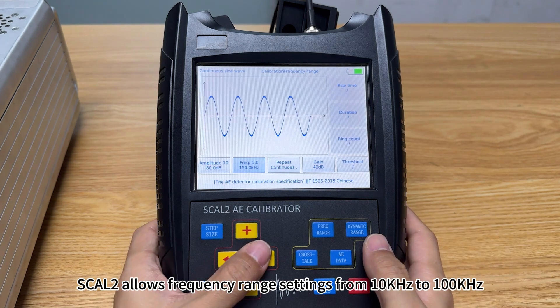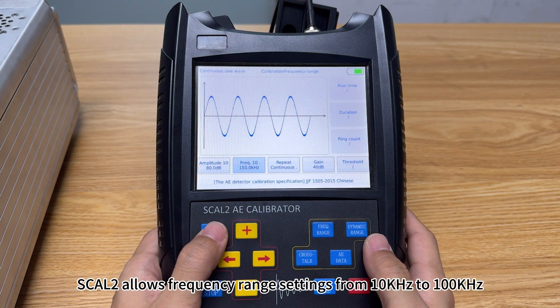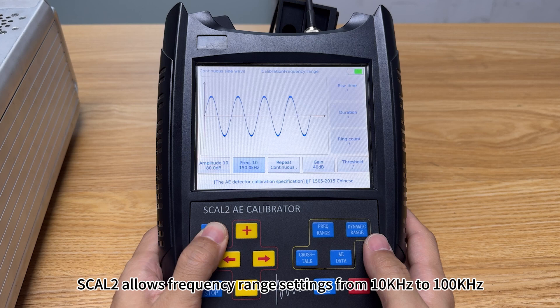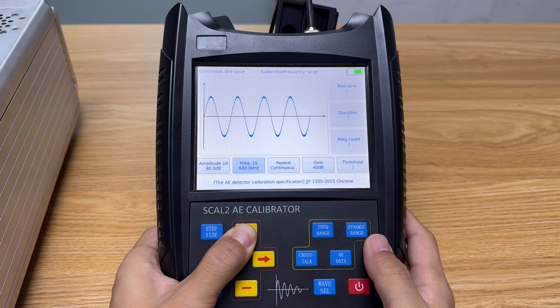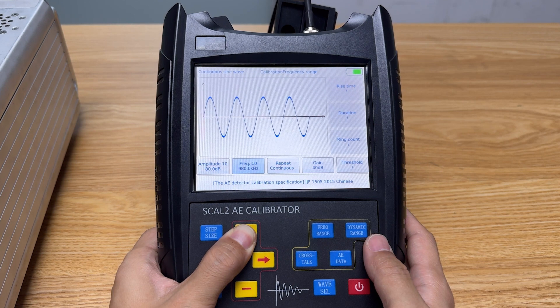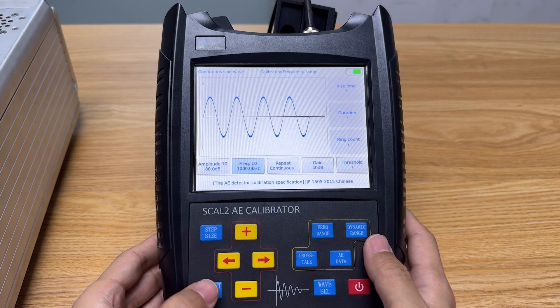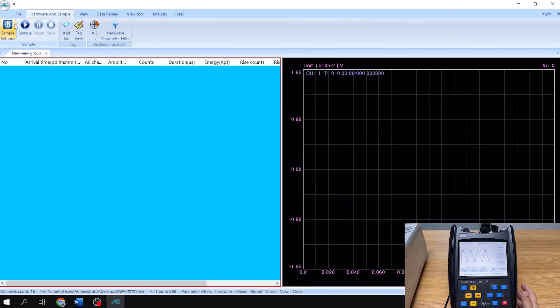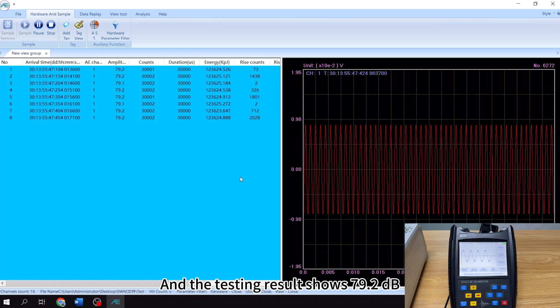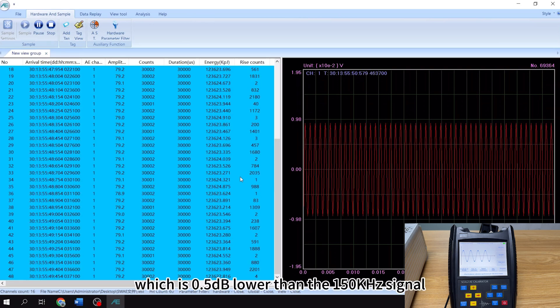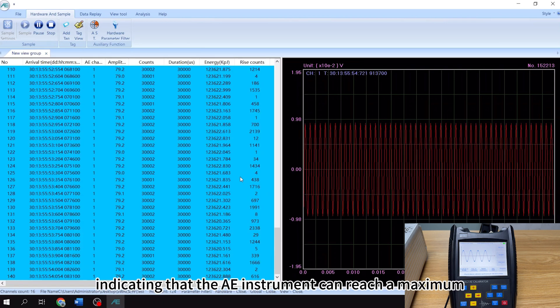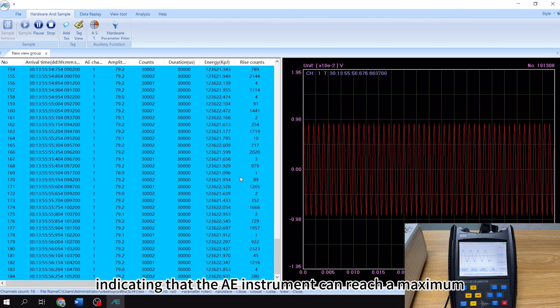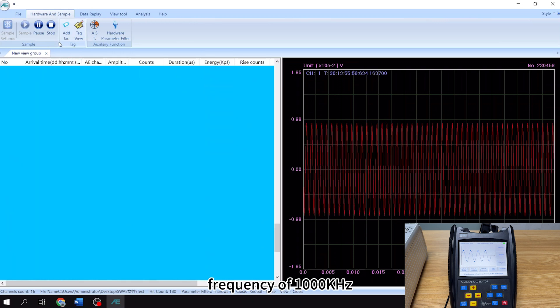SCAL-2 allows frequency range settings from 10 kHz to 1000 kHz. Now, change the frequency to 1000 kHz. Press output. And the testing result shows 79.2 dB, which is 0.5 dB lower than the 150 kHz signal, indicating that the AE instrument can reach a maximum frequency of 1000 kHz.